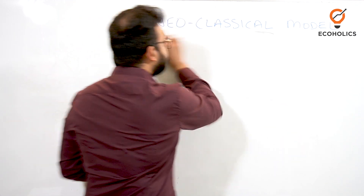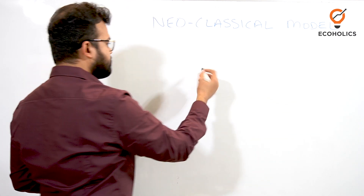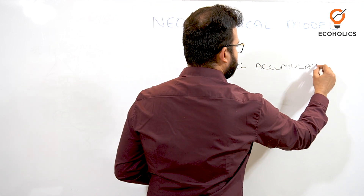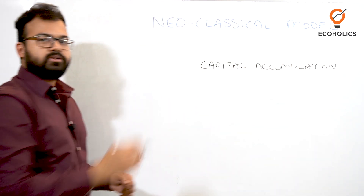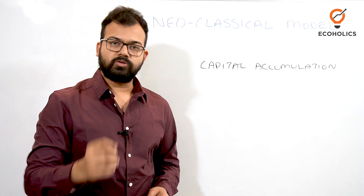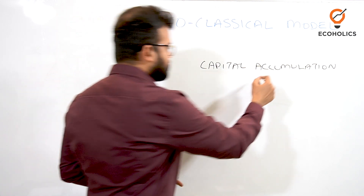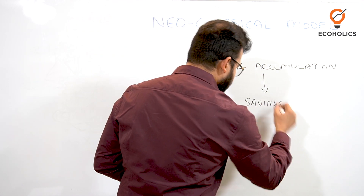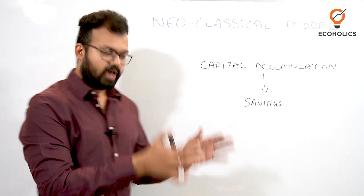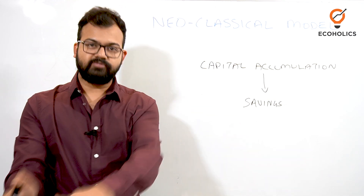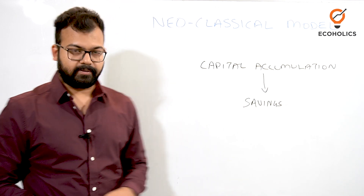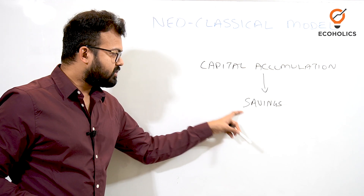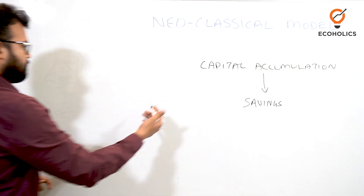In the neoclassical model, Solow gives a simple model where capital accumulation plays a very important role in determining the economic growth of a particular country. A very important determinant of capital accumulation is savings. If you save a lot, you have a good amount of capital accumulated that you can invest and achieve the desired growth rate — economies do the same thing.